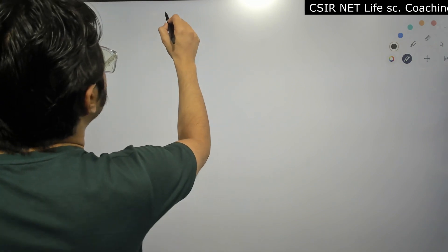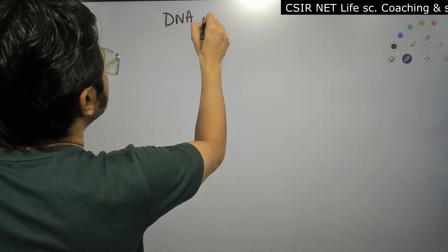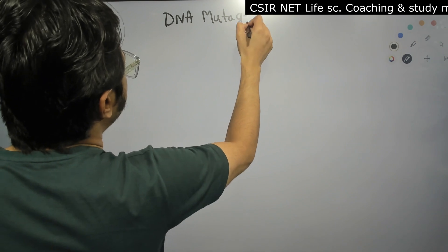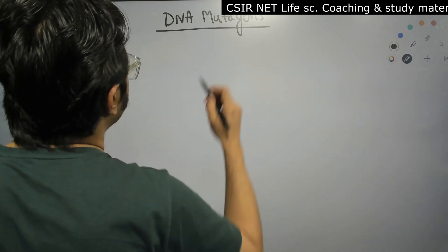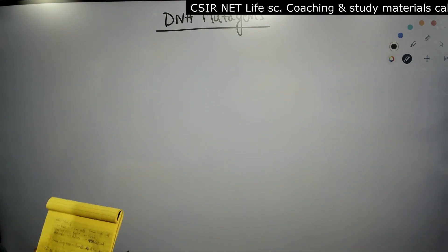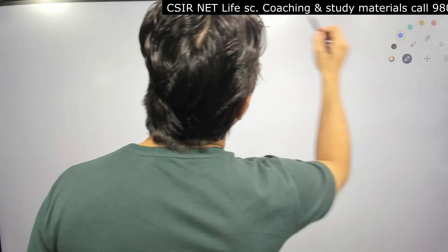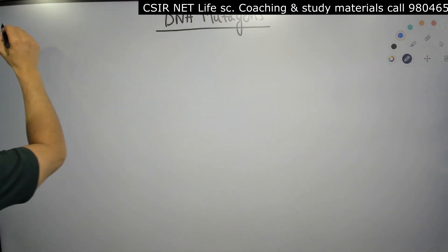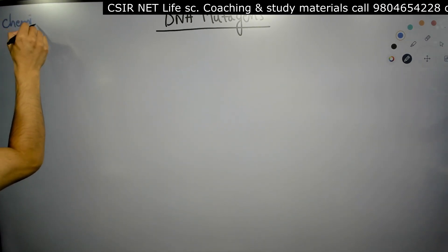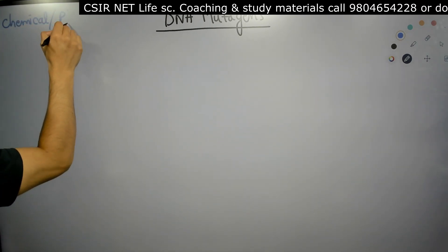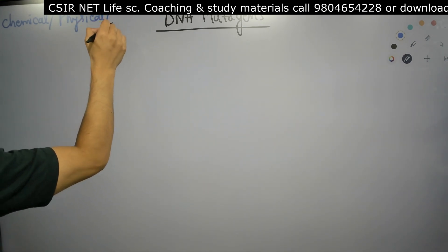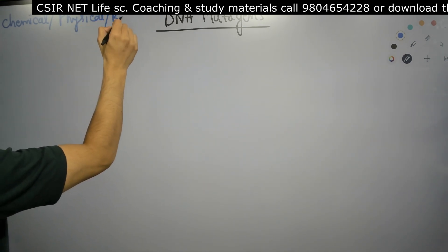Now we are going to talk about DNA mutagens. There are different factors that cause mutations to the DNA, and they are called mutagens. Mutagens can primarily be classified as chemical mutagens, physical mutagens, and biological mutagens.